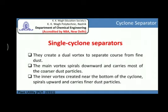In this figure we can see the top view of the outer vortex and the inner vortex. This single cyclone separator creates a dual vortex to separate coarse from fine dust. The main vortex spirals downward and carries most of the coarser dust particles, while the inner vortex created near the bottom of the cyclone spirals upward and carries the fine dust particles.